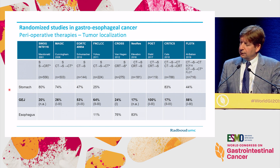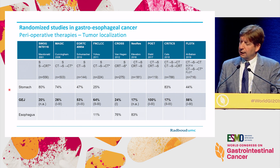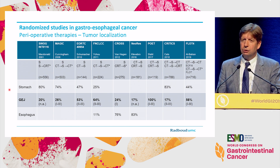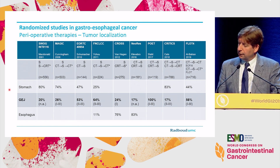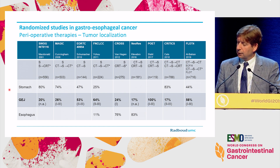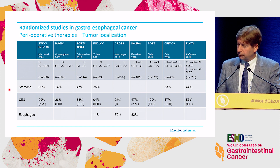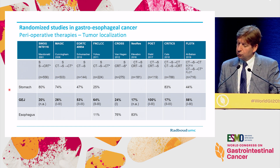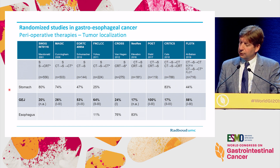The problem with the studies done so far — and you can see an overview on this slide of the most important recent studies — is that the percentage of patients with GEJ junction tumors varies significantly between 17 and 100 percent, and in most studies constitutes only a minority of the study population. So it's very difficult to draw any firm conclusions on this specific subtype of patients based on these studies.